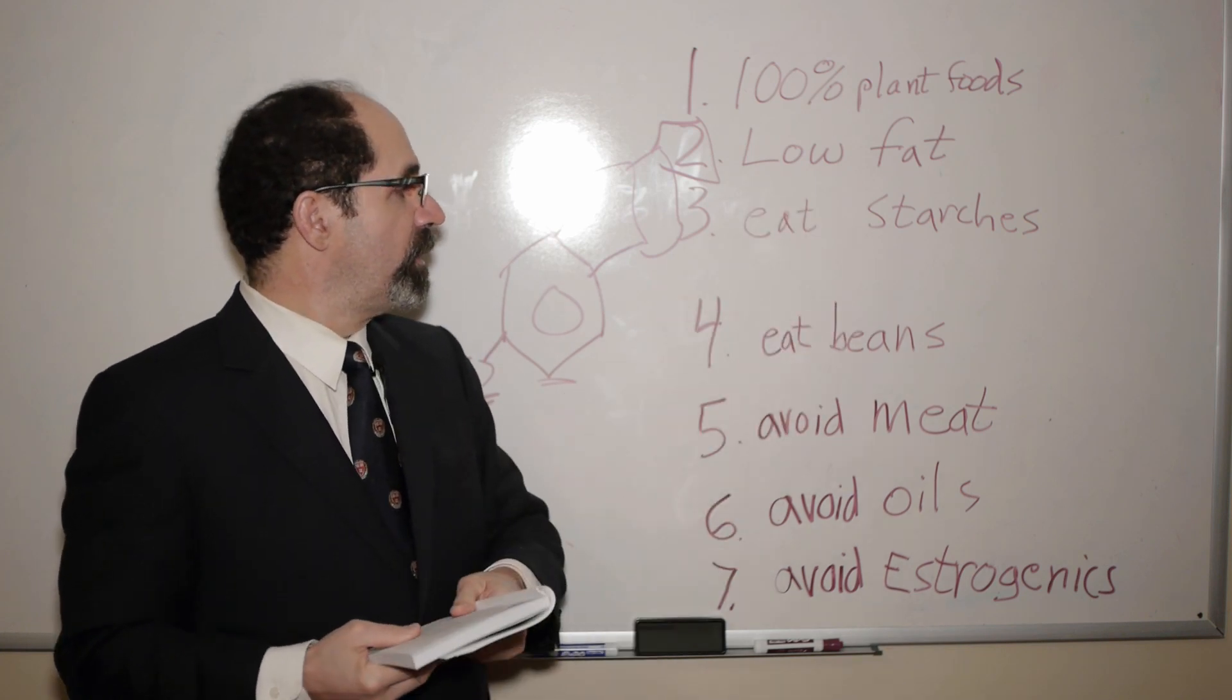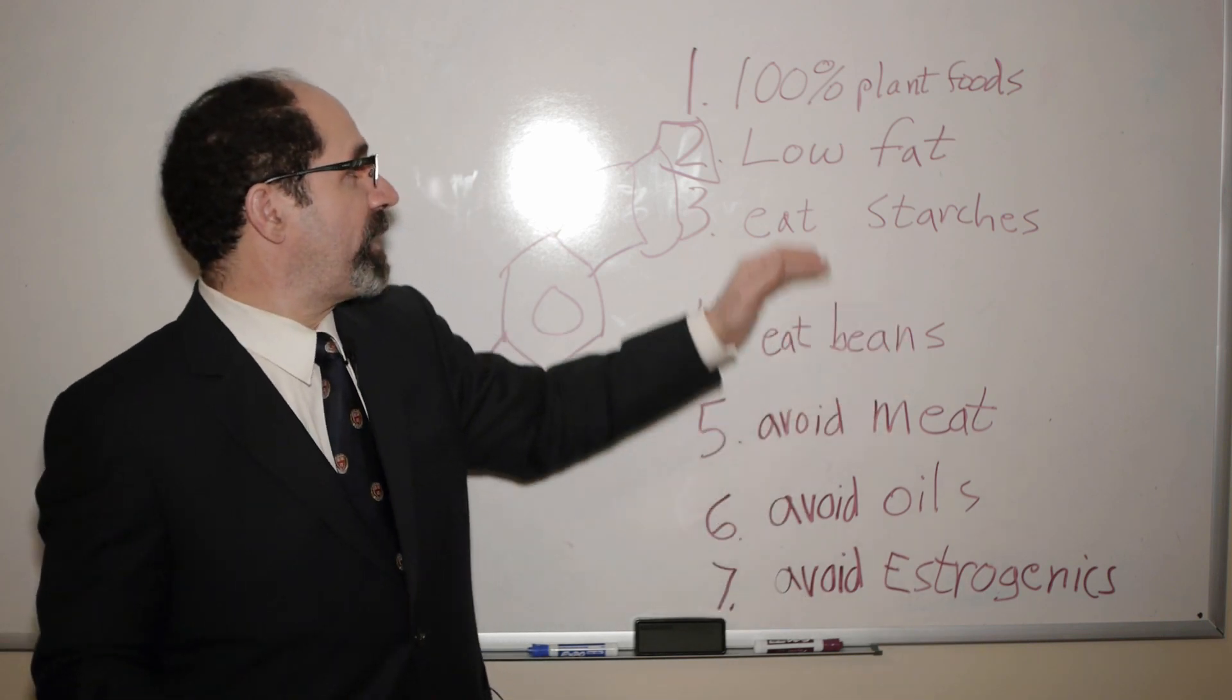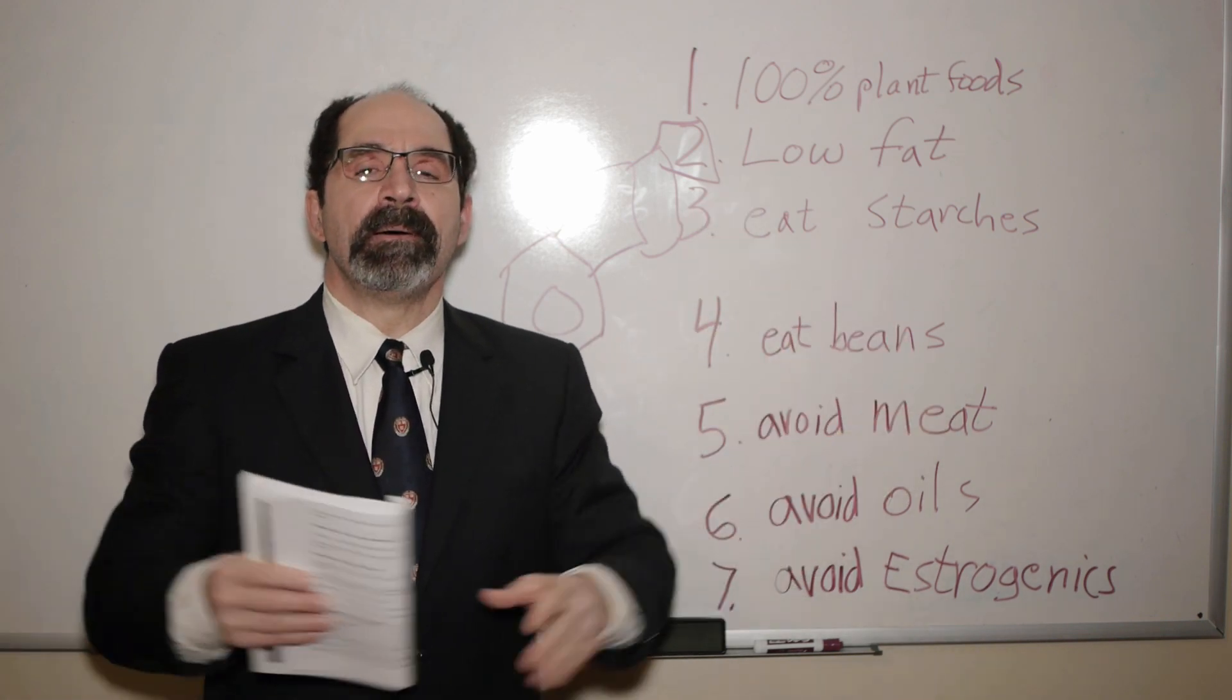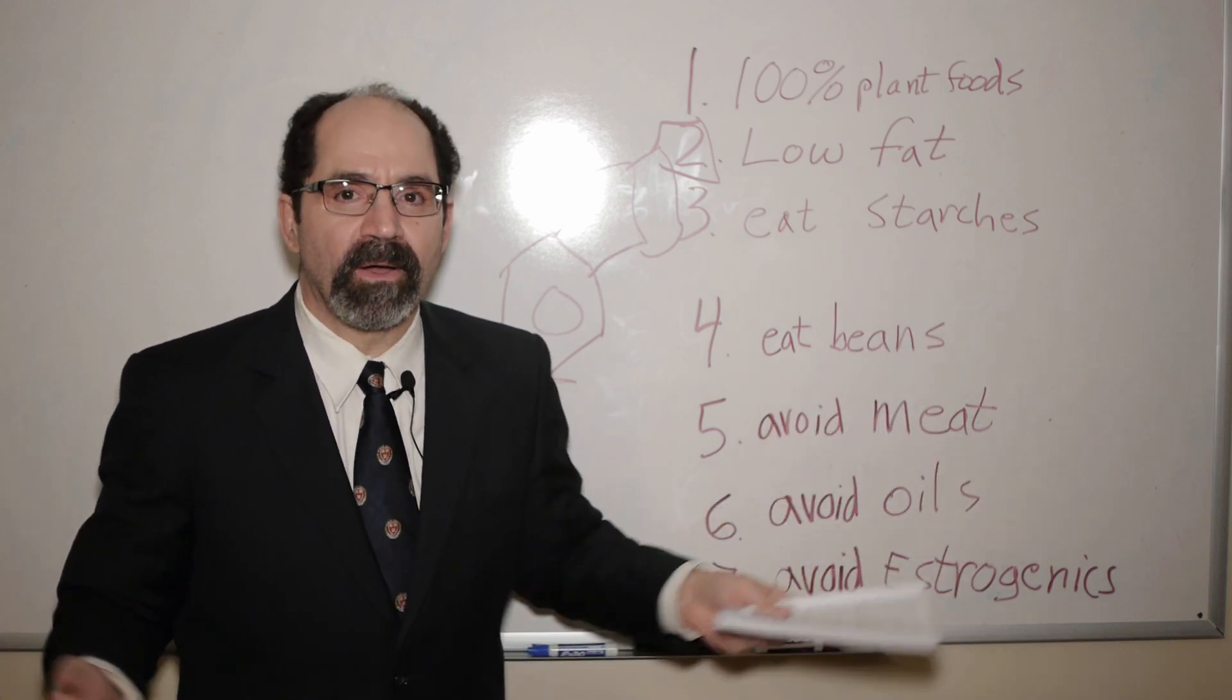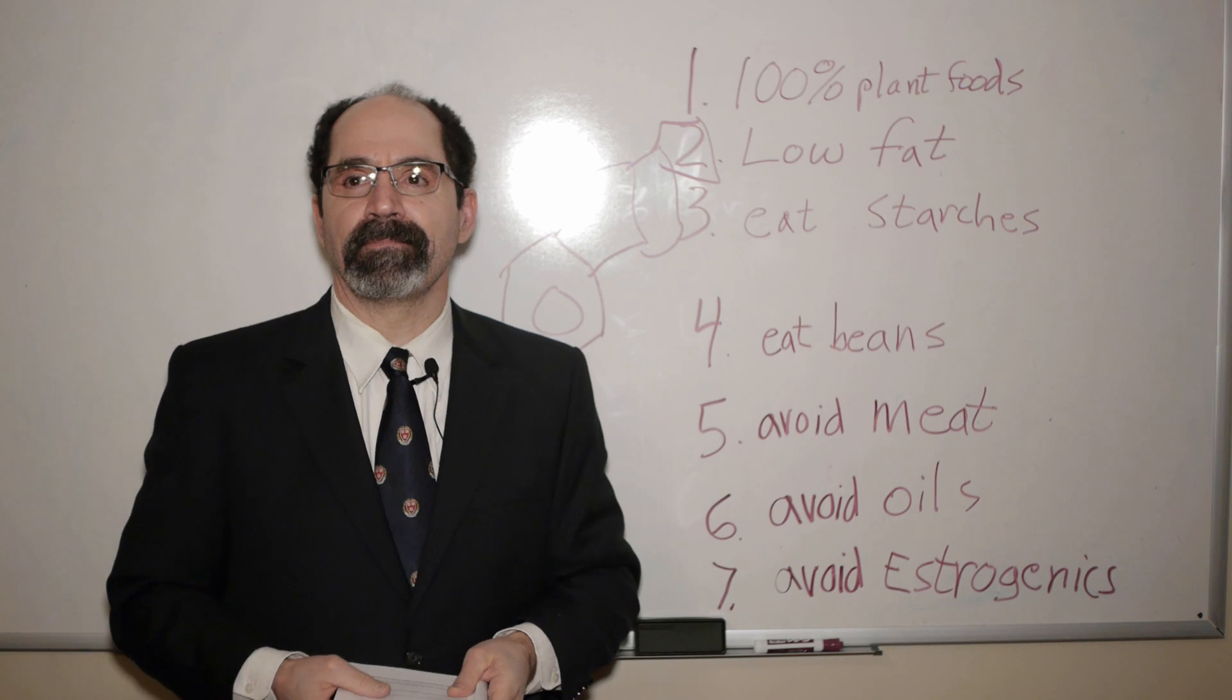So anyways, those are things you can do to optimize your body weight. And then you say, well, what's the proof of all this? Well, look at all the populations that eat this way and live this way. They're all skinny. They got average BMIs, body mass indices of around 22. Average American's fat, BMIs around 30. That's it.